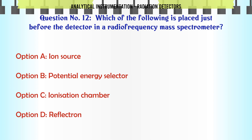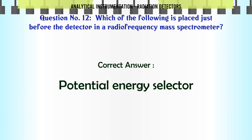Which of the following is placed just before the detector in a radio frequency mass spectrometer? A. Ion source. B. Potential energy selector. C. Ionization chamber. D. Reflectron. The correct answer is Potential energy selector.